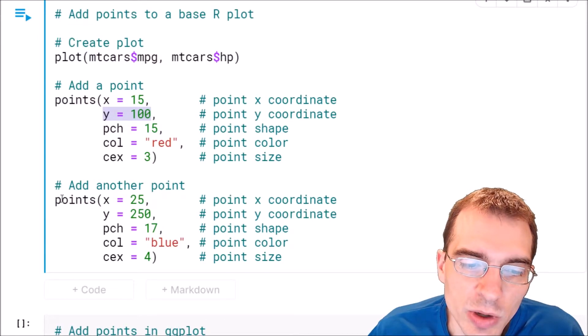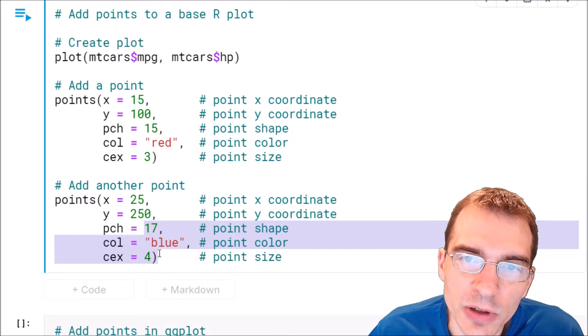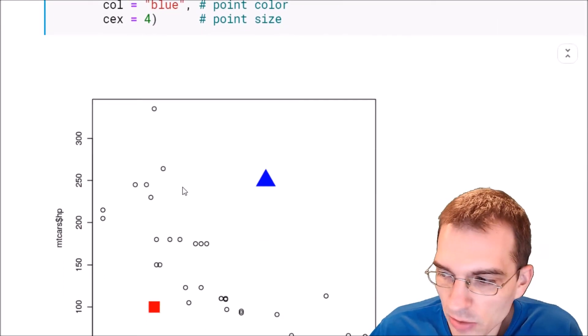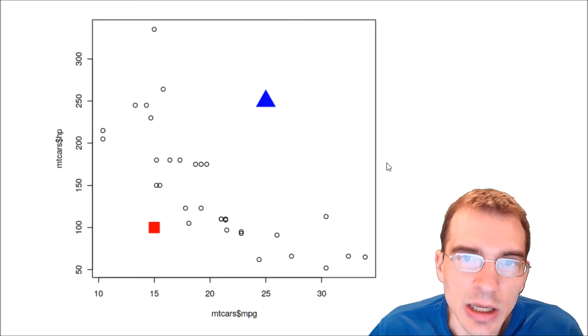And we're just going to add a second point here as well, just to show that we can put something in a different spot and have some different attributes for it. So I'll run that here. And we can see that indeed we created a scatter plot.